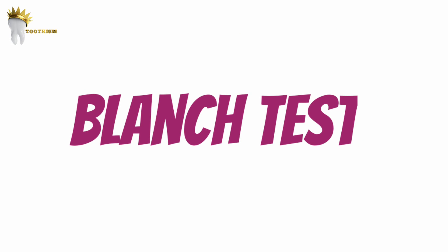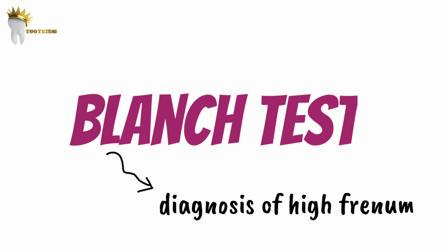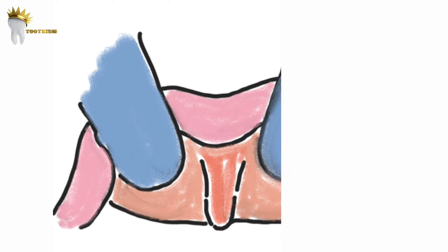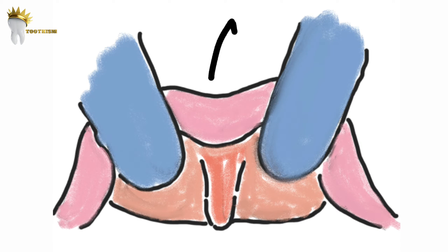The blanch test is the most commonly used method for the diagnosis of a high frenum attachment. In this test, the frenum is pulled and we observe whether there is any movement of the papillary tip or if any blanching is produced. This indicates that the frenum is attached at a high level.